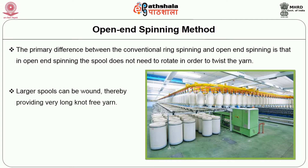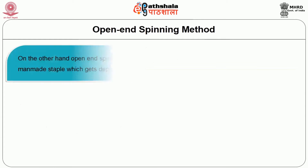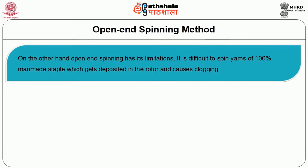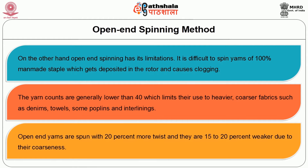Large spools can be wound, thereby providing very long knot-free yarn. Open-end spinning can produce yarn at a rate of three to five times that of conventional ring spinning. However, it is difficult to spin yarns of 100% man-made staple, which gets deposited in the rotor and causes clogging. The yarn counts are generally lower than 40, which limits their use to heavier, coarser fabrics such as denims, towels, some poplins and interlining. Open-end yarns are spun with 20% more twist and are 15 to 20% weaker due to their coarseness.